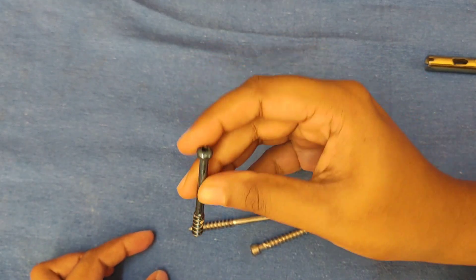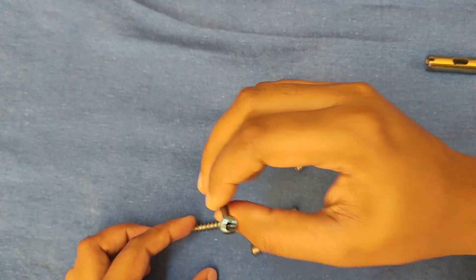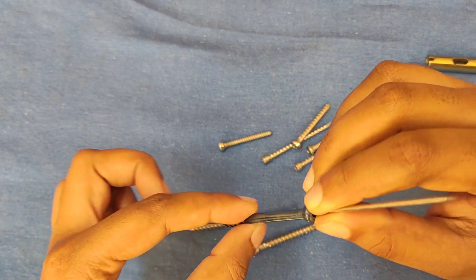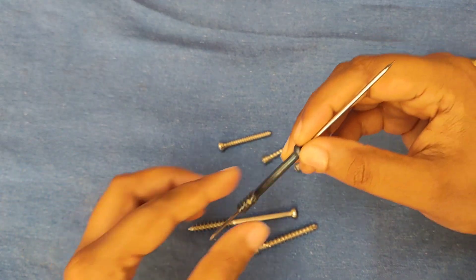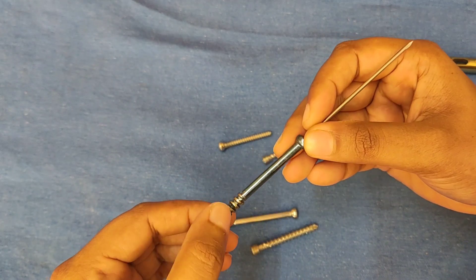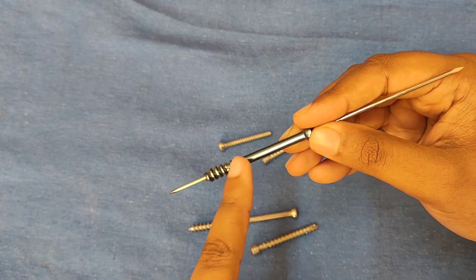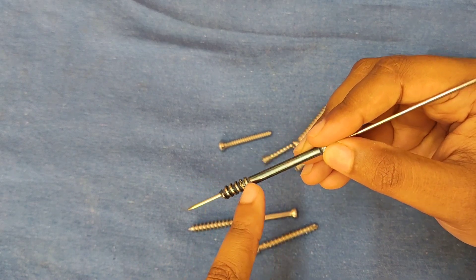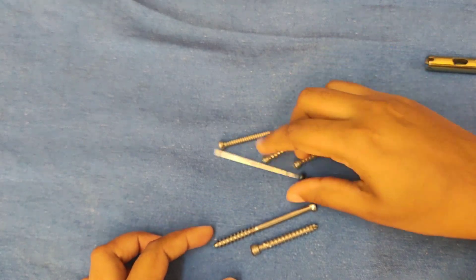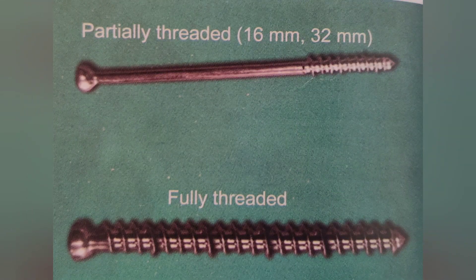Next is a partially threaded cannulated cancellous screw. Earlier, malleolar screws were partially threaded cortical screws of 4.5 mm diameter. At present, partially threaded 4 mm cancellous screw has taken its place. Here you can see a K-wire can easily pass through the screw.